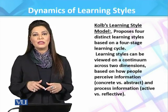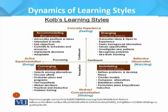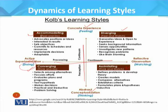I will now explain with the help of an image the continuum proposed by Kolb's model. Looking at this continuum, you can see the perception continuum and processing continuum. The four styles are: diverging (feeling and watching), assimilating (thinking and watching), converging (thinking and doing), and accommodating (feeling and doing). These are the four distinctive stages of learning styles as proposed by Kolb.